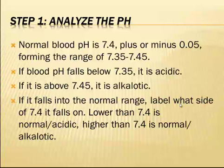On step one, we analyze the pH. The normal blood pH is 7.4 plus or minus 0.05, forming the range of 7.35 to 7.45. If the blood pH falls below 7.35, it is acidic. If it is above 7.45, it is alkalotic. If it falls in the normal range, label which side of 7.4 it falls on — 7.35 to 7.39 is normal acidic, and 7.40 to 7.45 is normal alkalotic.